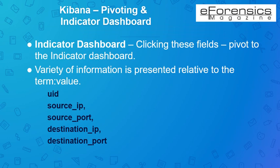The Indicator dashboard is another option in Kibana. You can fetch all the information you require about a particular indicator from this dashboard. Fields listed include UID, source.ip, destination.ip, source.port, and destination.port with hyperlinks. In the home dashboard, you can find all of the different datasets such as HTTP, FTP, DNS, and much more.